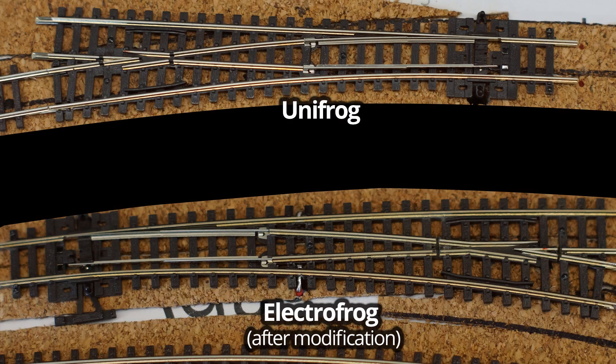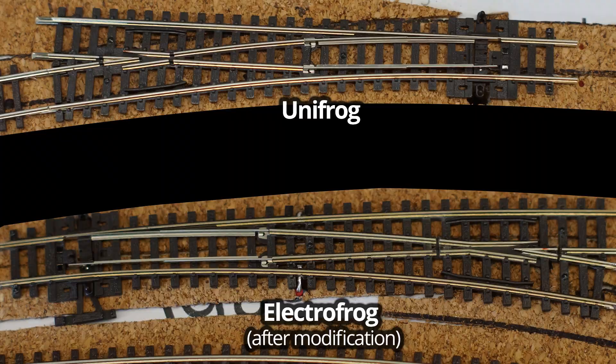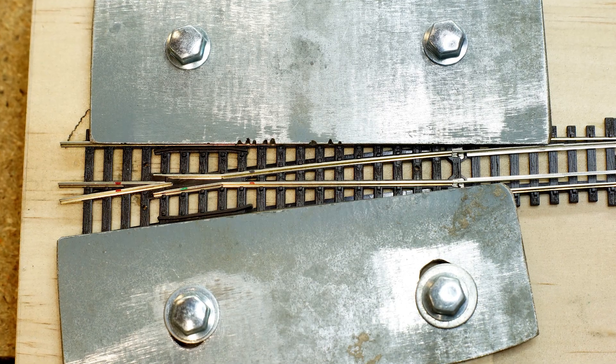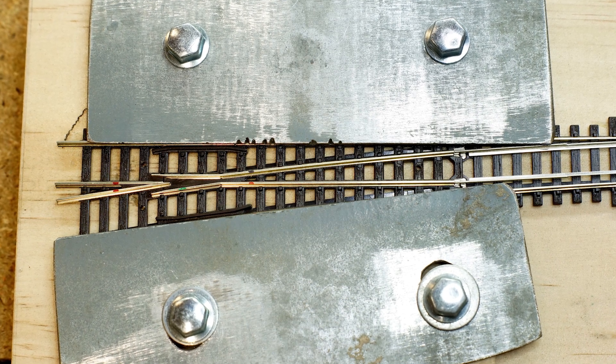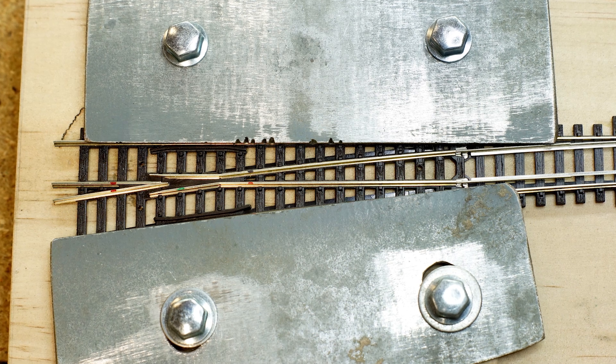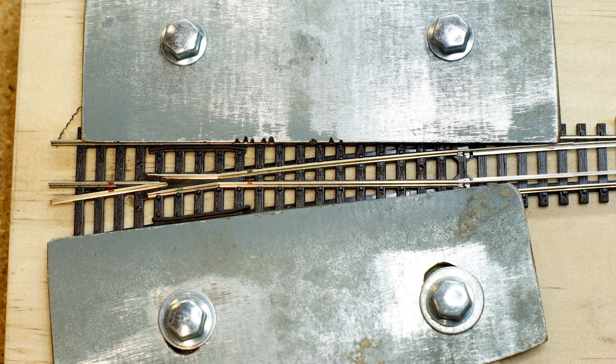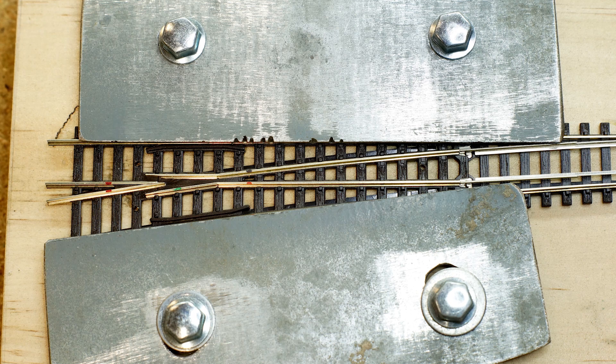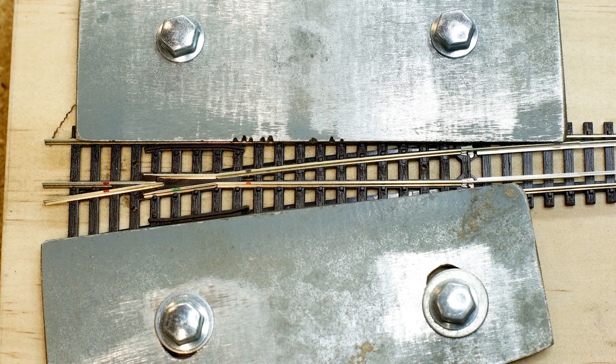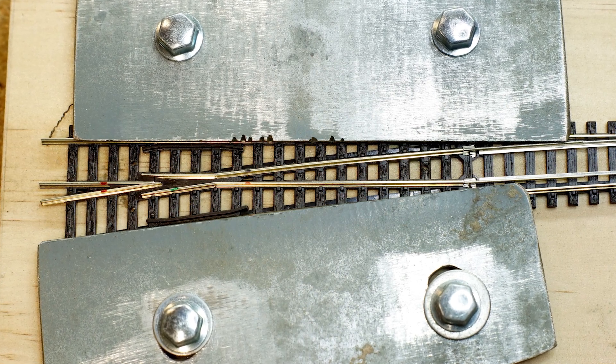If you've already gone down the unifrog pathway, you've made a wise decision. This is specifically about modifying electrofrog turnouts for a substantially better model railway. We'll use a simple jig to make this process much easier. I work in N scale, which is the hardest due to its size. If you're modelling in HO or 00, the same principles apply, it'll just be a bit easier.